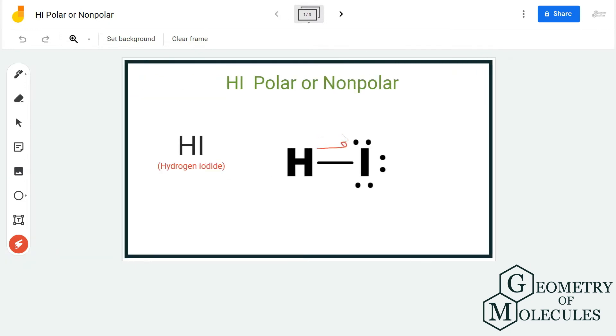Hence there will be a dipole moment, and the vector of which will be towards the iodine atom as it is more electronegative. So there is a dipole moment in this molecule which is not nullified.